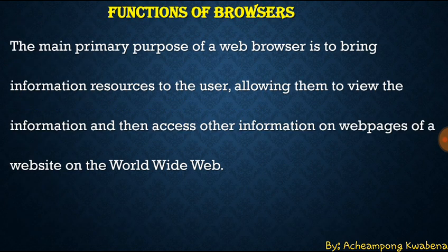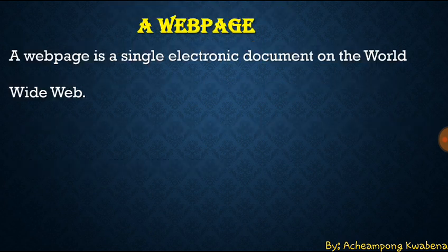The main function of a web browser is to bring information resources to the user, allowing them to view the information and access other information on web pages of a website on the World Wide Web. A web page is a single document on the World Wide Web or the internet. Whenever you open a browser and click on a hyperlink, the page placed within the browser window is what we refer to as a web page.